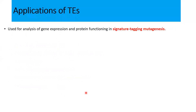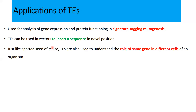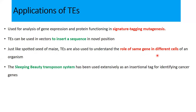As for the applications of transposable elements: they are used in studies related to gene expression and understanding protein functions. A special type of study called signature-tagging mutagenesis generally utilizes transposable elements. They can also be used in vectors to insert sequences into novel positions — vectors being the means to transfer genes or DNA from one organism to another. There is also a system called the Sleeping Beauty transposon system, which is used for identifying cancer cells or cancer genes in different cells.